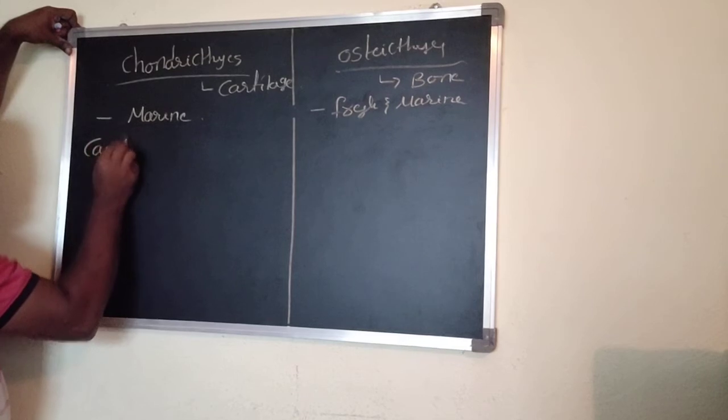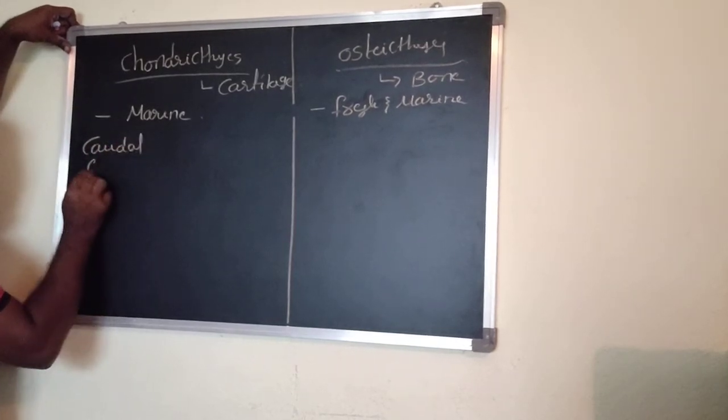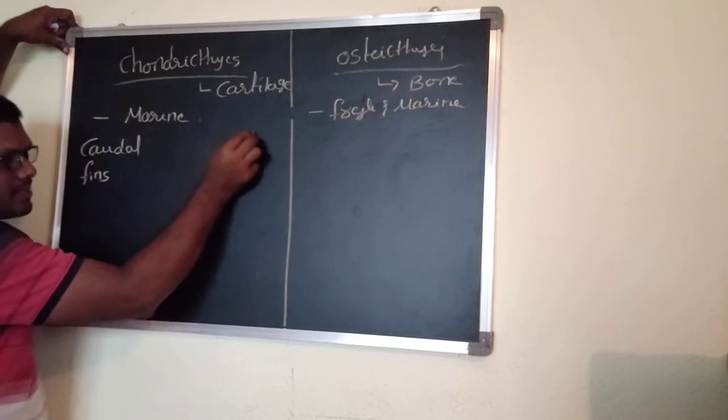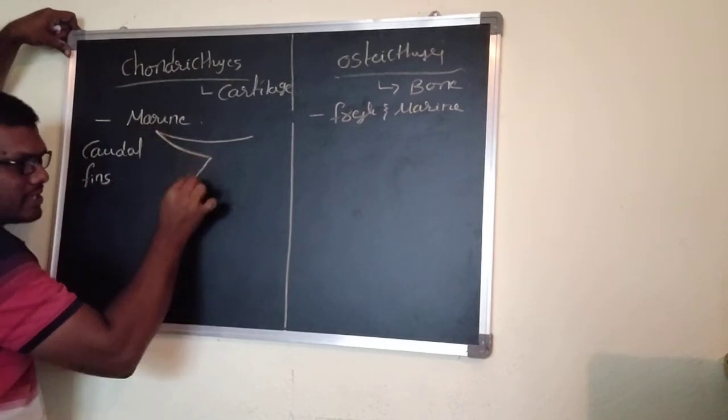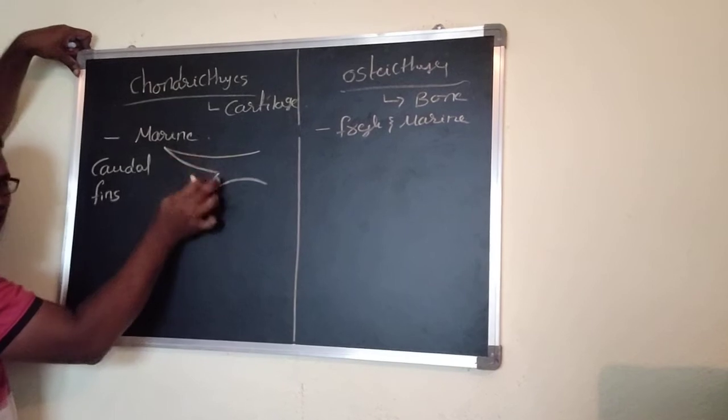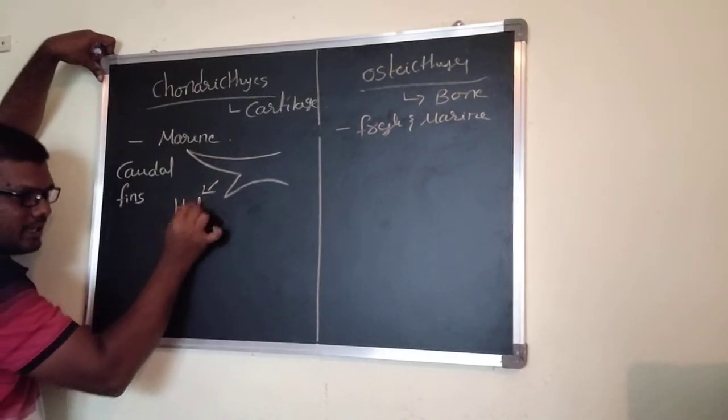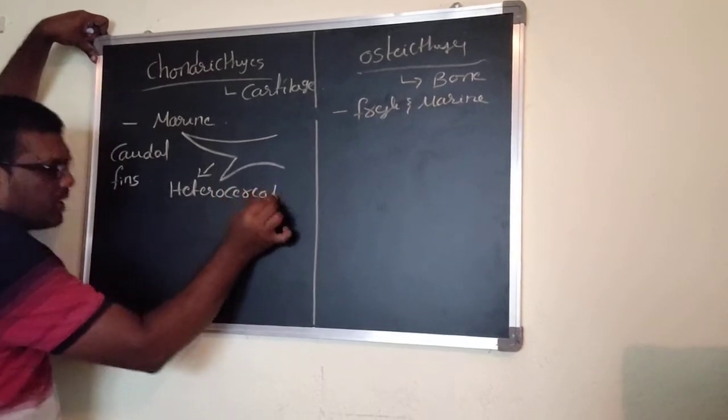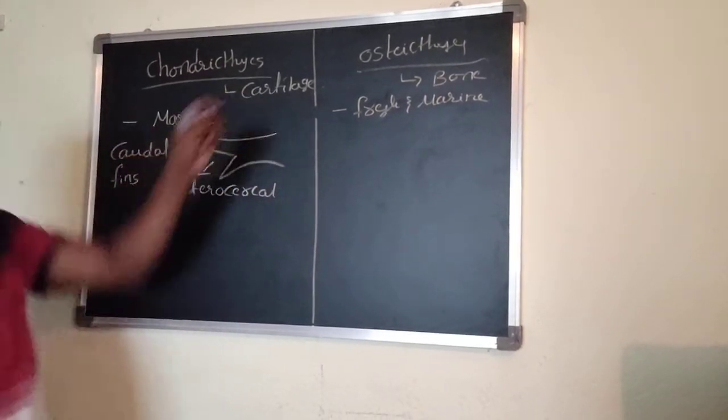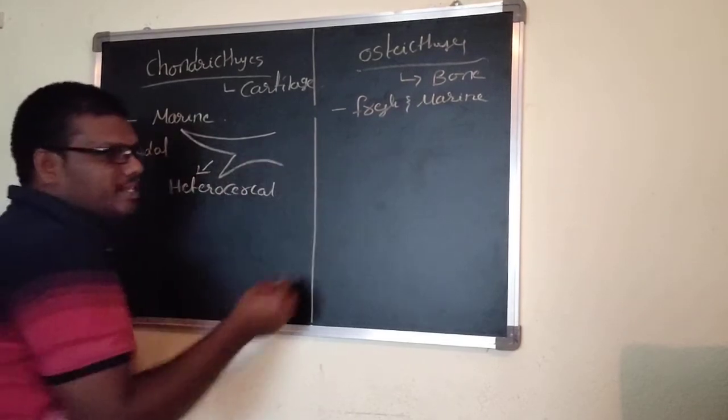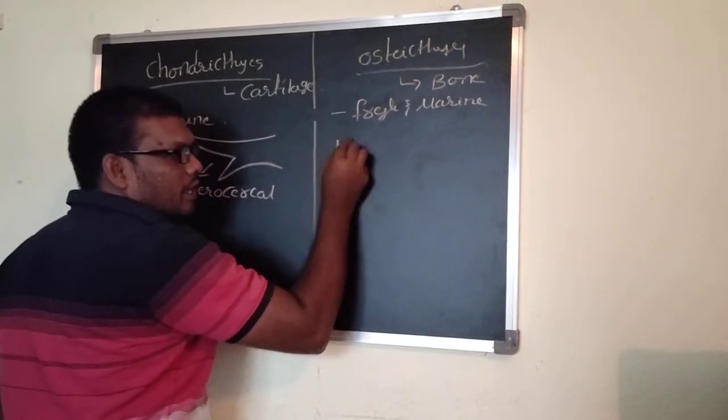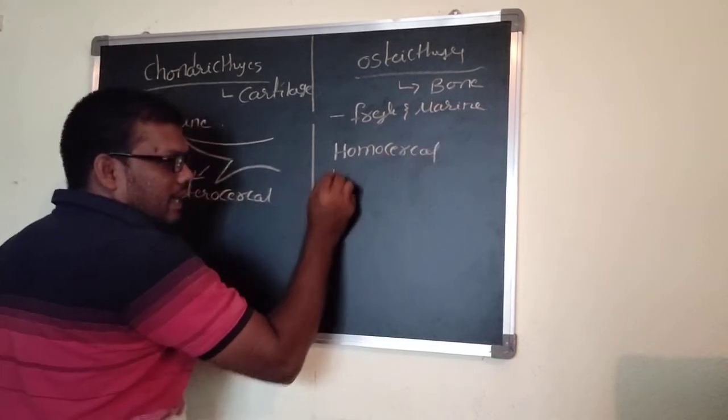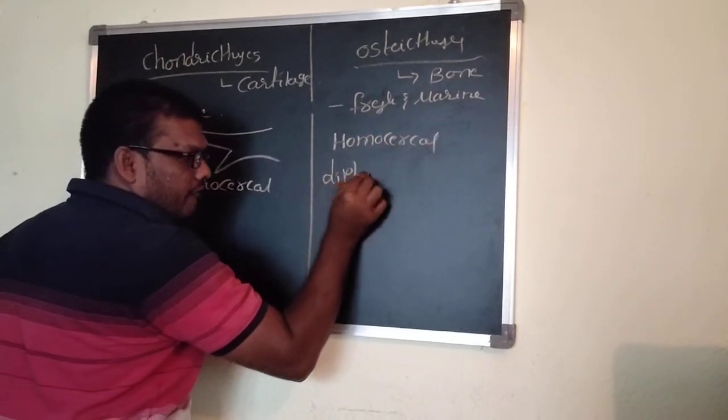The very important one is caudal fins. For Chondrichthyes type organisms, the caudal fins are heterocercal, unequal ones. If you observe Osteichthyes, the caudal fins are two types. One is homocercal, another one is diphycercal.